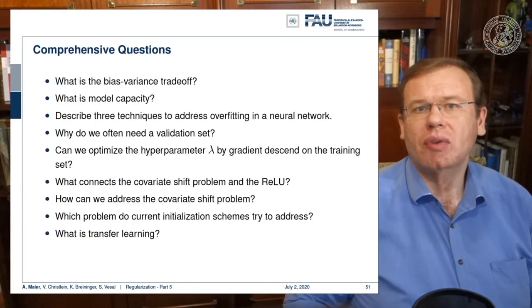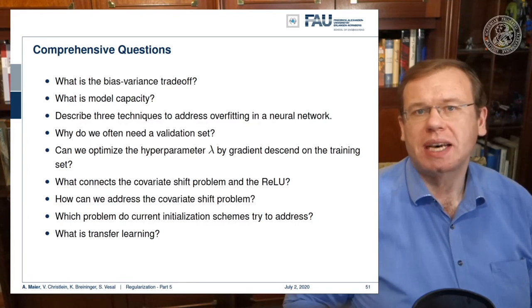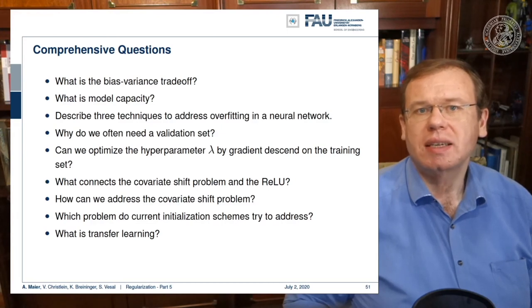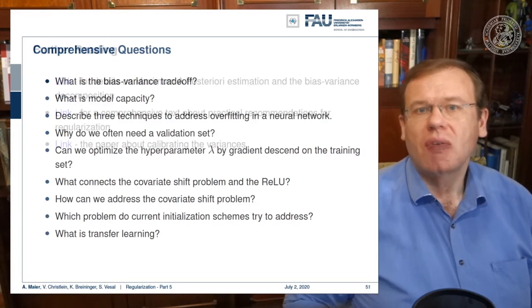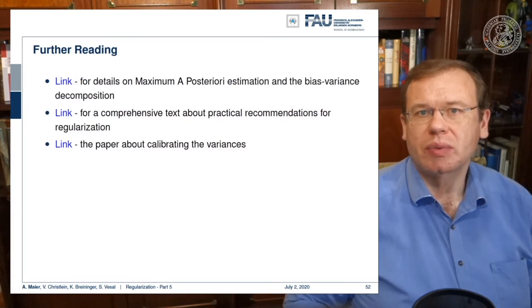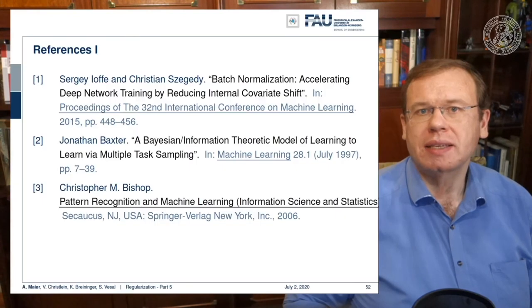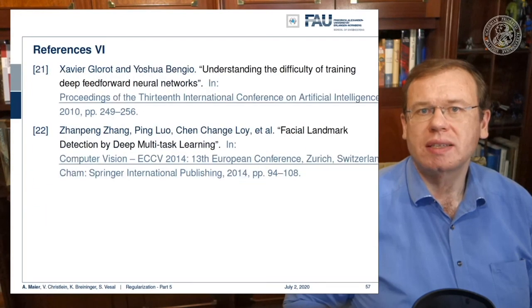I have a couple of comprehensive review questions: What is the bias-variance trade-off? What is model capacity? Describe three techniques to address overfitting. What connects the covariate shift problem and the ReLU? How can we address the covariate shift problem? I also have further links I really recommend, and plenty of references for this video. I hope you enjoyed this last part on our summary of different regularization techniques — looking forward to seeing you in the next set of videos on common practices. Bye bye!